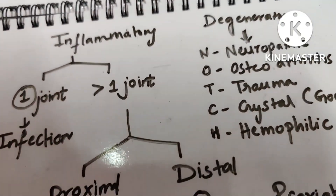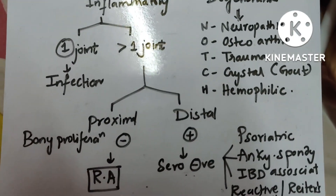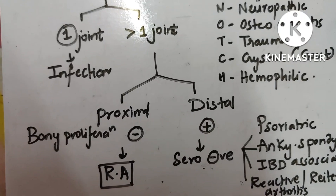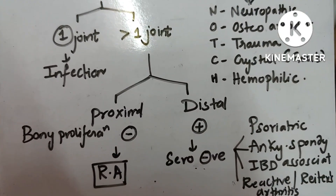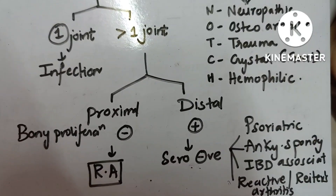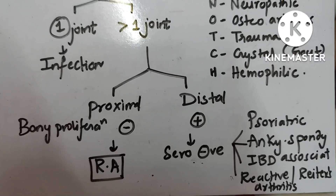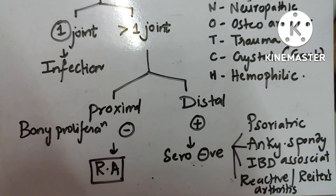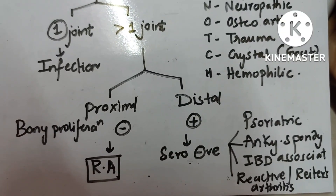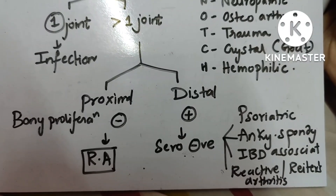Under inflammatory arthritis, if one joint is involved it is probably due to infection. When greater than one joint is involved, it is divided based on which joints: if proximal joints are involved with no bony proliferation, it is rheumatoid arthritis. If distal joints are involved with bony proliferation, it is seronegative arthropathy.